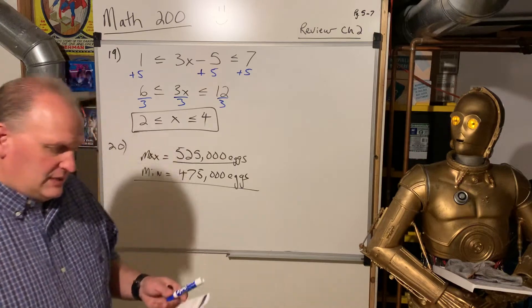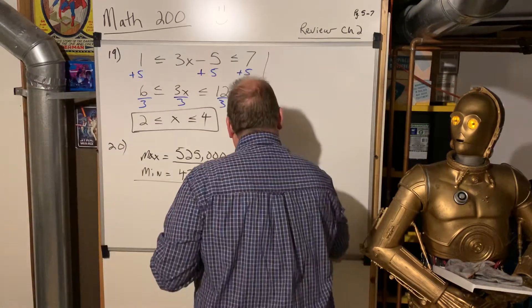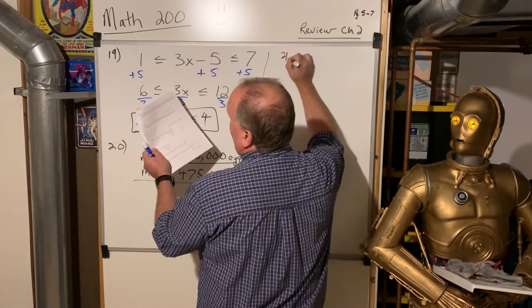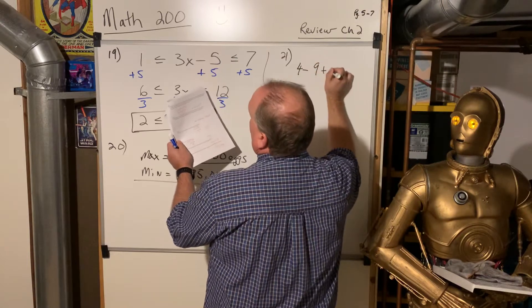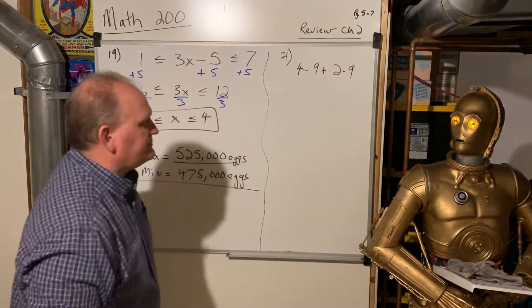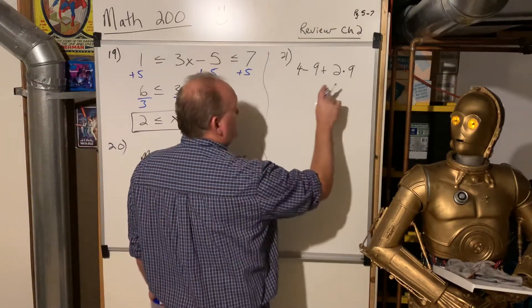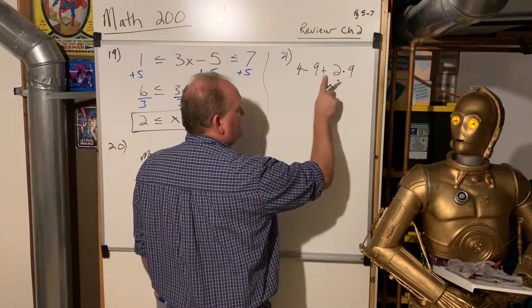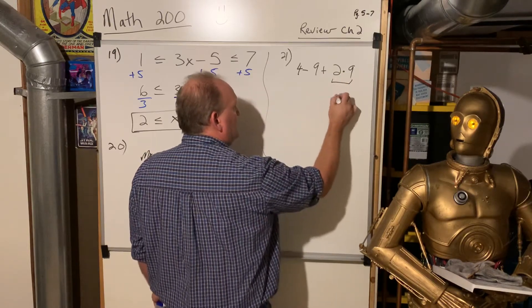All right, use order of operations to simplify. So please excuse my dear Aunt Sally. That means we do parentheses, then exponents, then multiply, divide, then add, subtract. So, a couple of things, though. So out of this, we have minus, we have plus, we have times. So we're going to do times first, and we're going to multiply first. So that's 18.